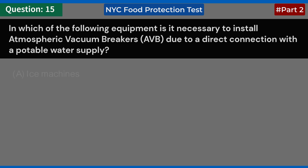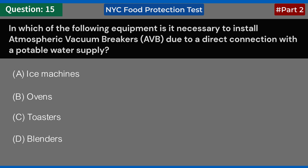In which of the following equipment is it necessary to install atmospheric vacuum breakers (AVB) due to a direct connection with a potable water supply? A. Ice machines. B. Ovens. C. Toasters. D. Blenders. Answer: A. Ice machines.